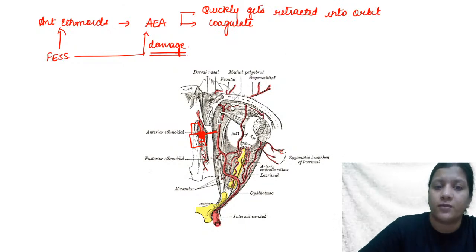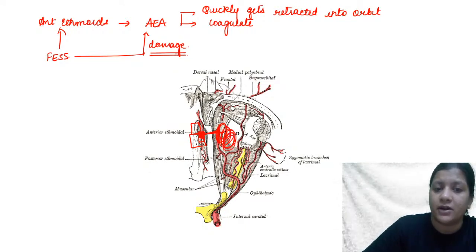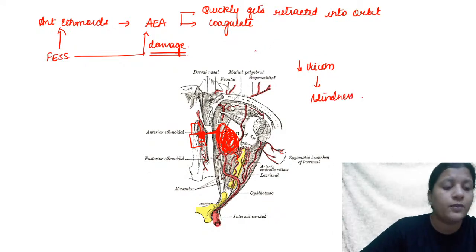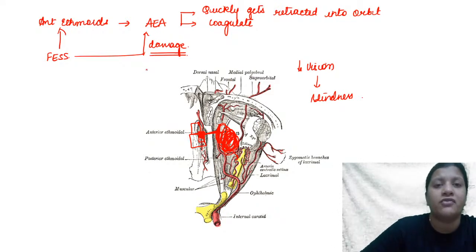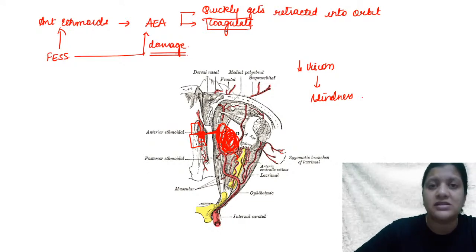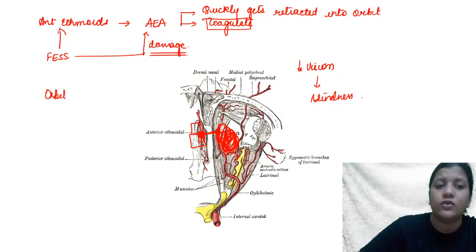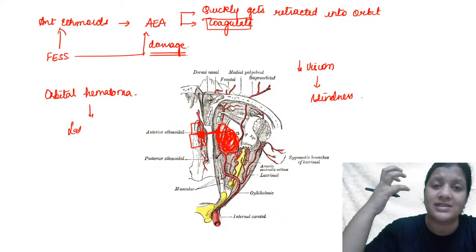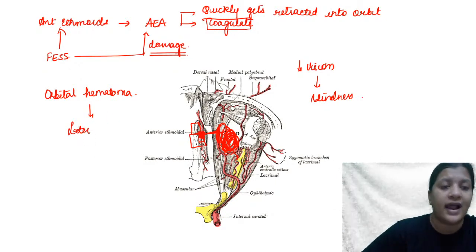The anterior ethmoidal artery is a branch of the ophthalmic artery. If it retracts into the orbit, it will result in an orbital hematoma, which compresses the optic nerve, causing decreased vision initially and later blindness. If an orbital hematoma forms, the first step is a lateral canthotomy — this allows the orbit to expand and reduces compression on the optic nerve.